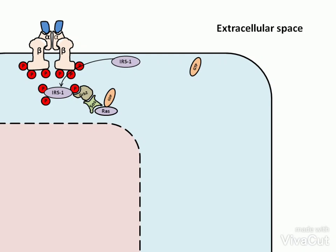This binding causes the release of GDP and binding of GTP to RAS. As a result, RAS becomes activated. This active RAS binds and activates RAF-1.